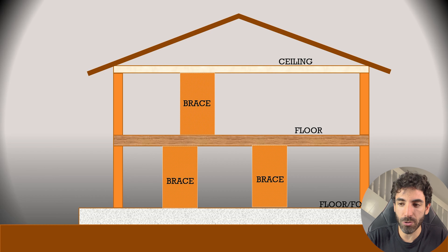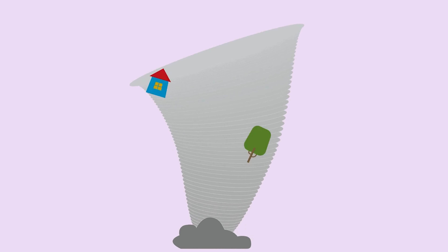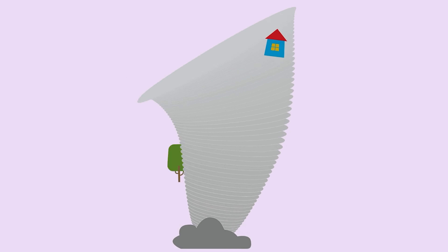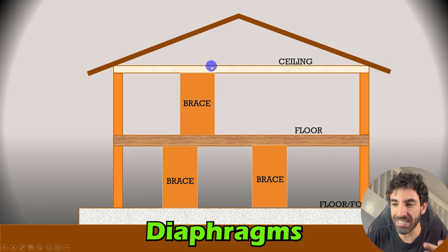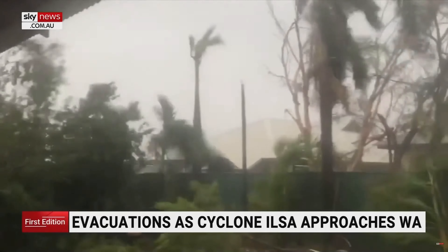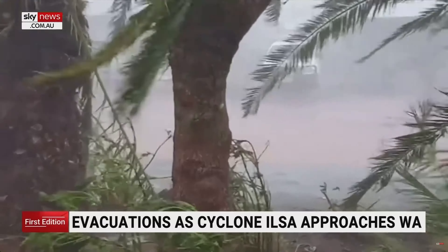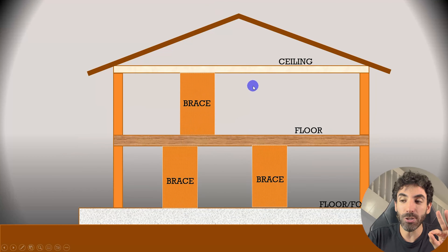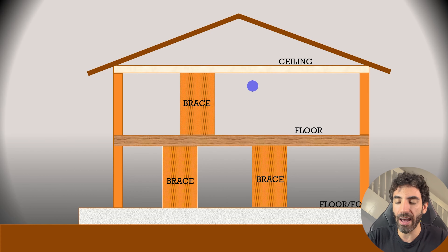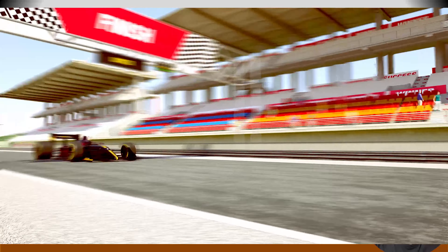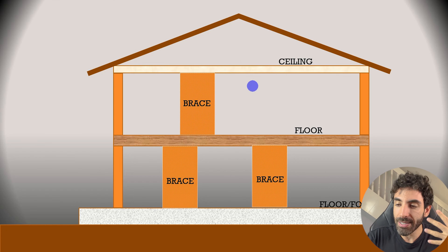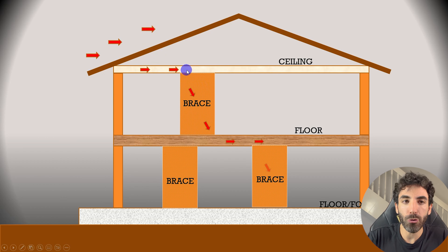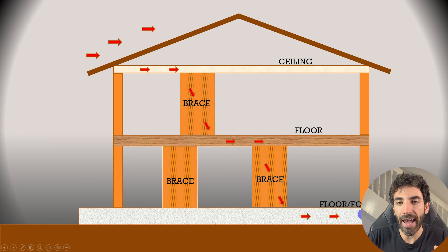Besides gravity loads, we also have lateral loads from wind, which are distributed between bracing walls by the floor and ceiling diaphragms. If you're building in cyclonic areas — and we have cyclonic areas in Australia — wind gusts can get to over 300 km/h. That's the speed of a Formula One car, the speed of a Ferrari, and you have to design the structure properly for these loads. The wind that hits the roof goes through the ceiling, through the brace, through the floor, brace, and footings.